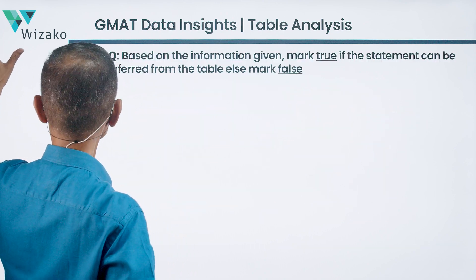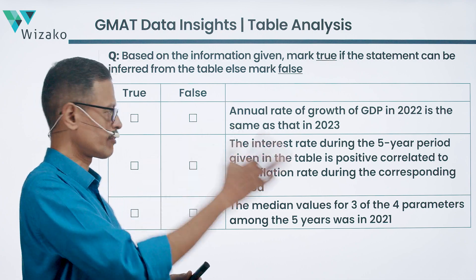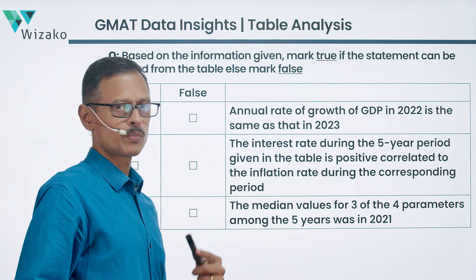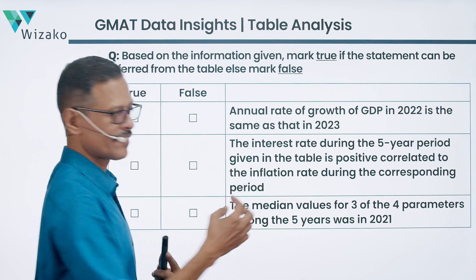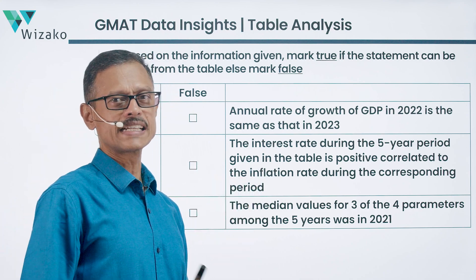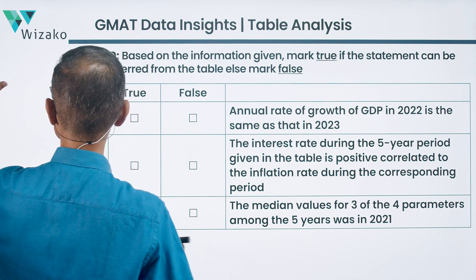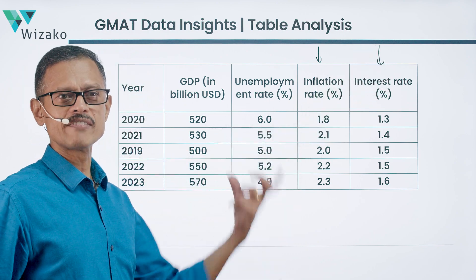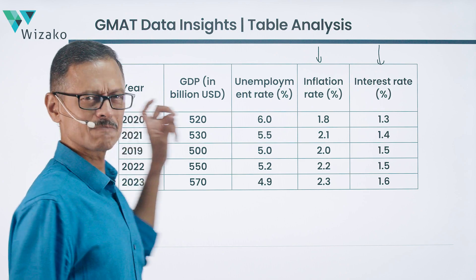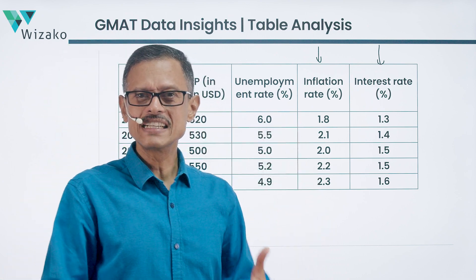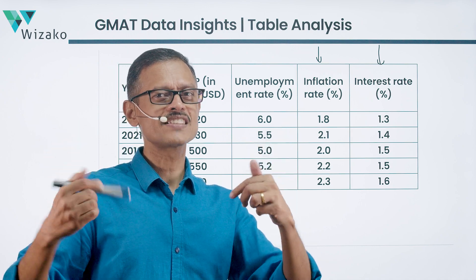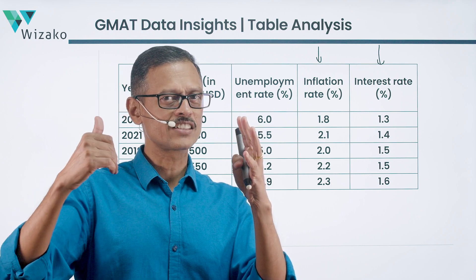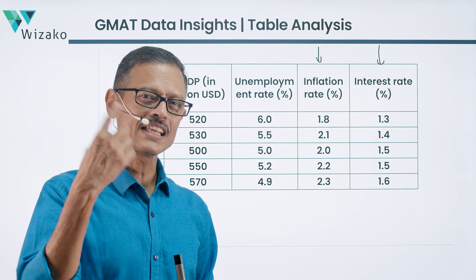The second statement, also classified as true or false, asks whether the interest rate during the five-year period is positively correlated to the inflation rate during the corresponding period. You need to examine both columns four and five. If both increase or decrease simultaneously, that's positive correlation; if one increases while the other decreases, that's negative correlation. Consider whether sorting would help you solve this.